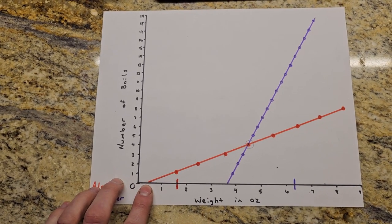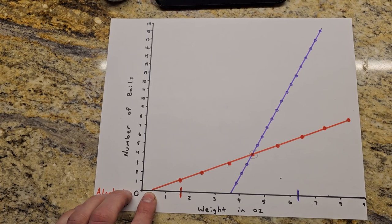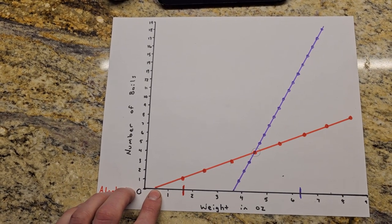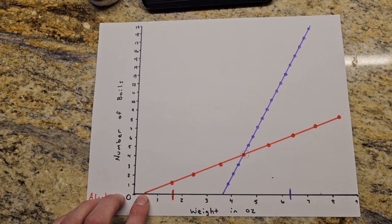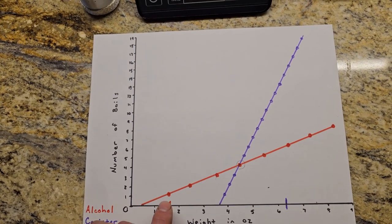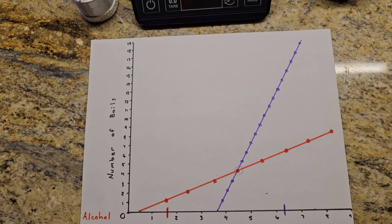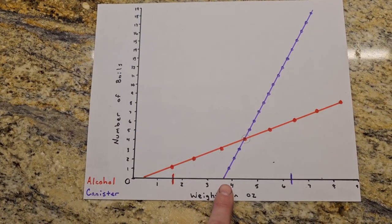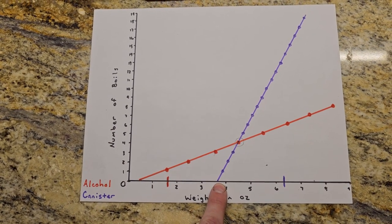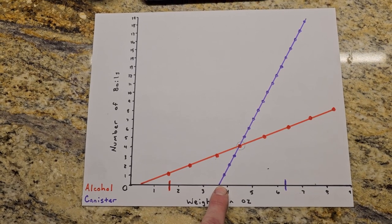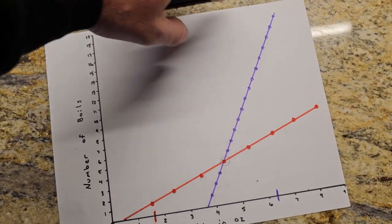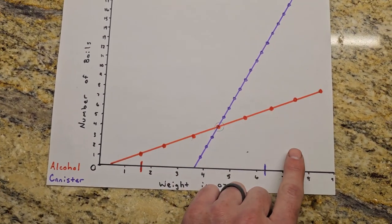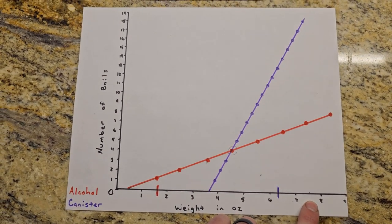So start here at half an ounce for my alcohol setup and that's because this is how much my container weighs. The little bottle starts off at half an ounce. So then we go up one ounce for each boil. Whereas my canister fuel is going to start off around 3.6 ounces and goes up to a total of 18 or 19 boils but we're only at around seven and a half ounces.